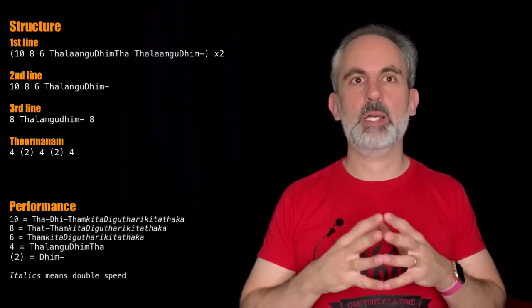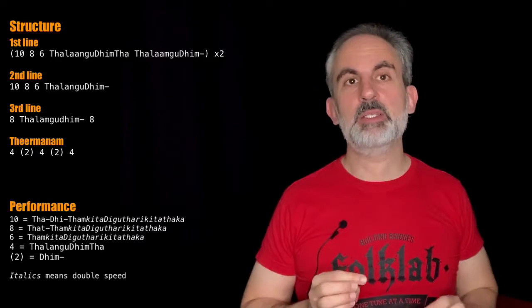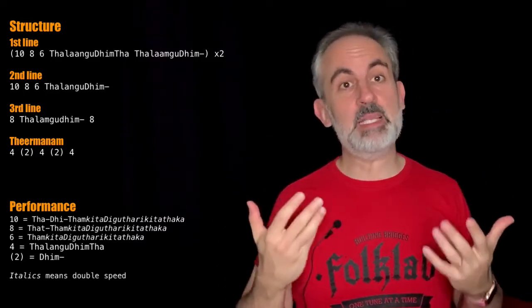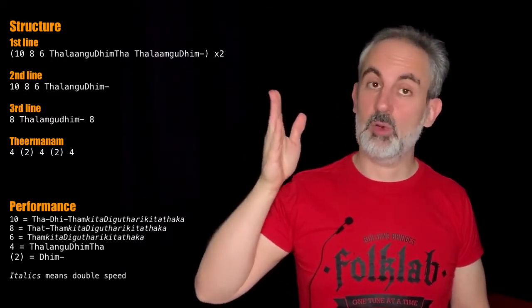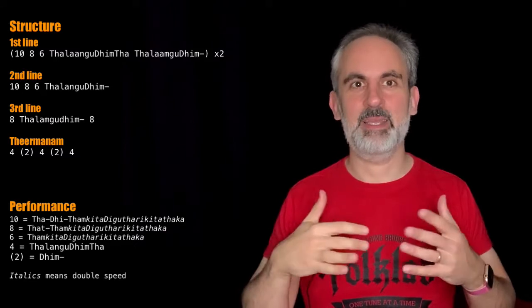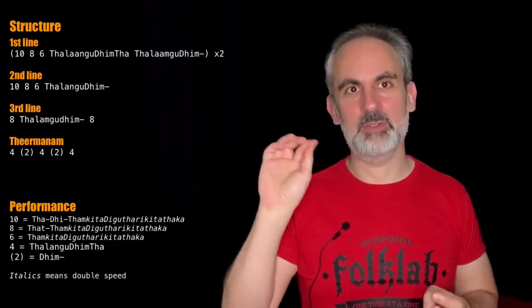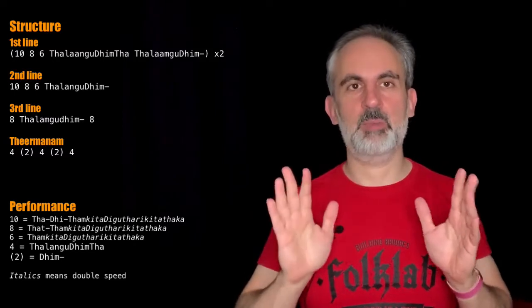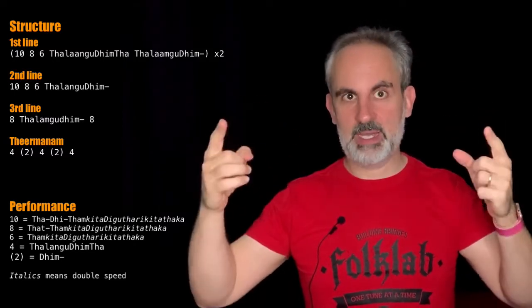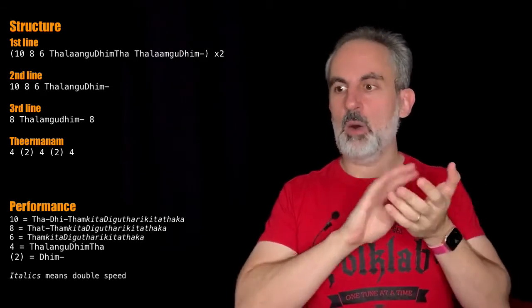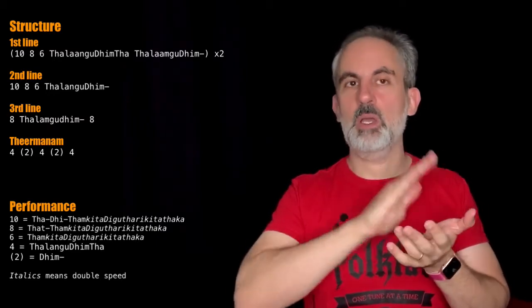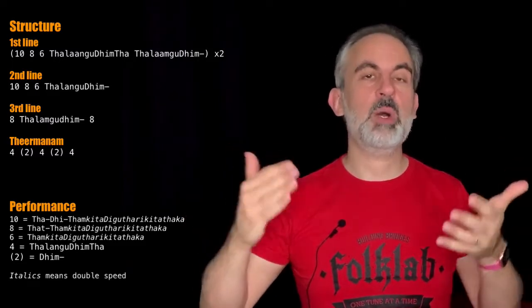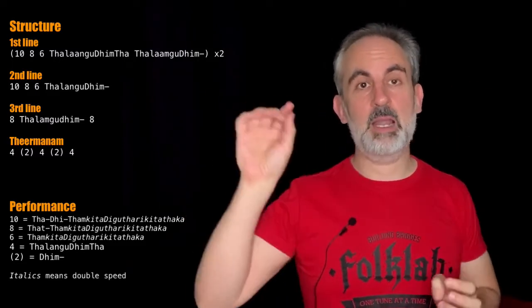As you will remember, a Mohara is a composition that has a very definite structure, so we have three lines and a terminum. The first line of today's Mohara is a phrase for ten beats, a phrase for eight, a phrase for six beats, and then Talangudimta Talangudim. This is the typical phrase that, in a way, identifies a Mohara. If you hear Talangudim or some of its variants, you'll know we're talking about a Mohara. This first line we repeated twice. The first line of this Mohara is exactly one avartanam long, from beginning to end, and since we're playing it twice, it means that the first two avartanams of the Mohara are only the first line.